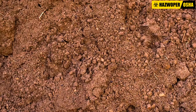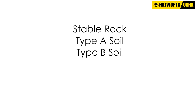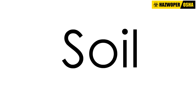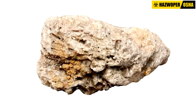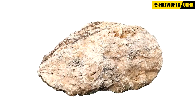Soil is divided into four different types: stable rock, type A soil, type B soil, and type C soil. Stable rock is the strongest, most solid type of earth. There is no OSHA-specified test for determining stable rock, and the judgment is left up to the competent person on site.